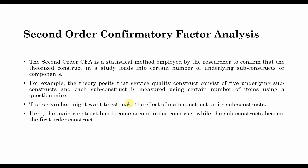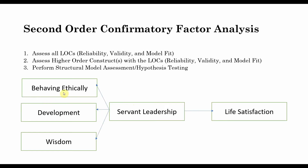Now how do we model this in AMOS? Consider a sample model where servant leadership is a higher-order construct with three sub-dimensions. We are not interested in assessing the impact of these sub-dimensions on life satisfaction. Rather, we are interested in assessing the impact of servant leadership on life satisfaction. So what is the process of second-order confirmatory factor analysis, or how do we estimate higher-order constructs?